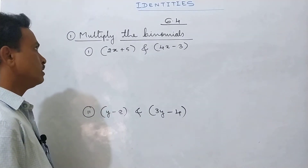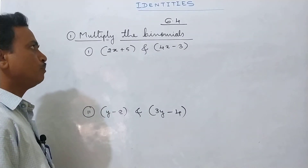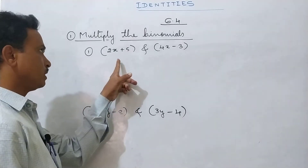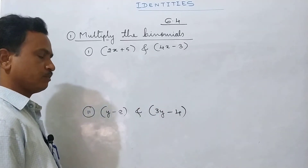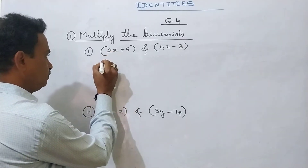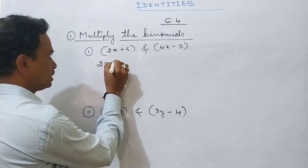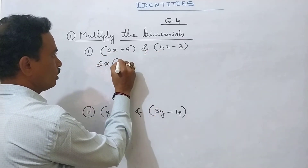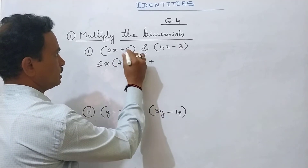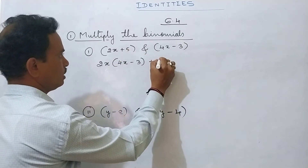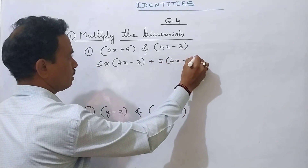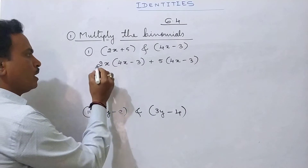Section 6.4: Multiply the binomials. First question: (2x + 5) and (4x - 3). Take the first term 2x into the second binomial (4x - 3), then plus the second term 5 into (4x - 3), then multiply.